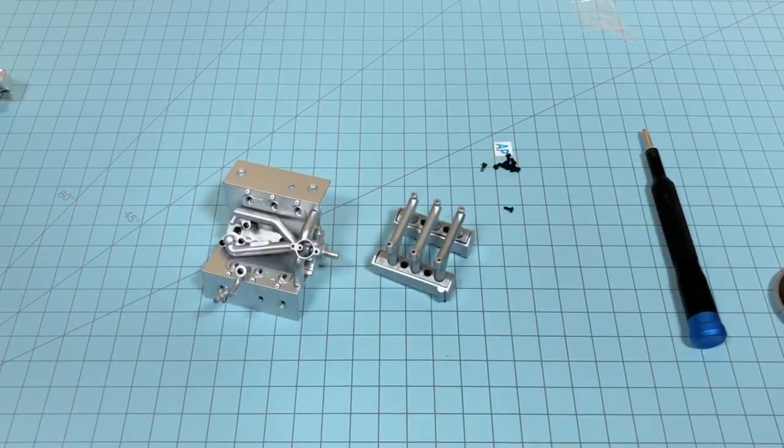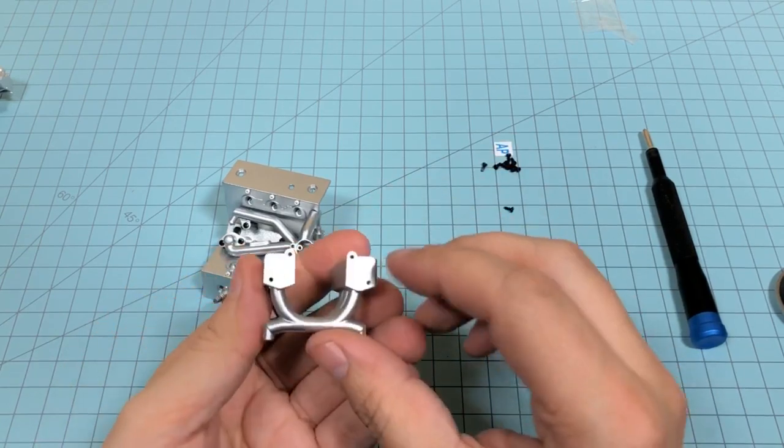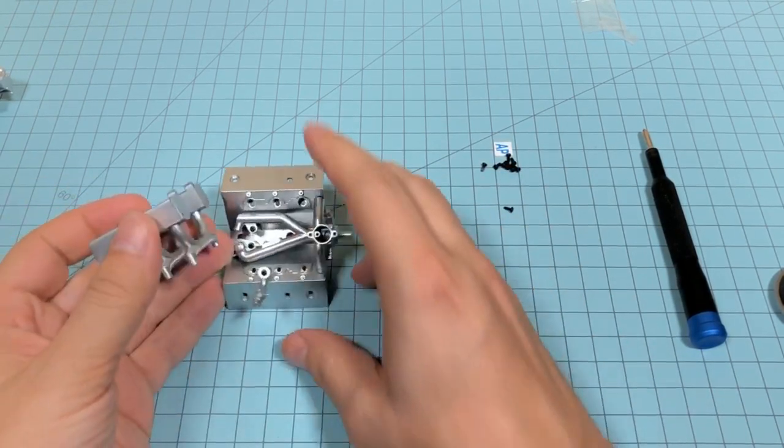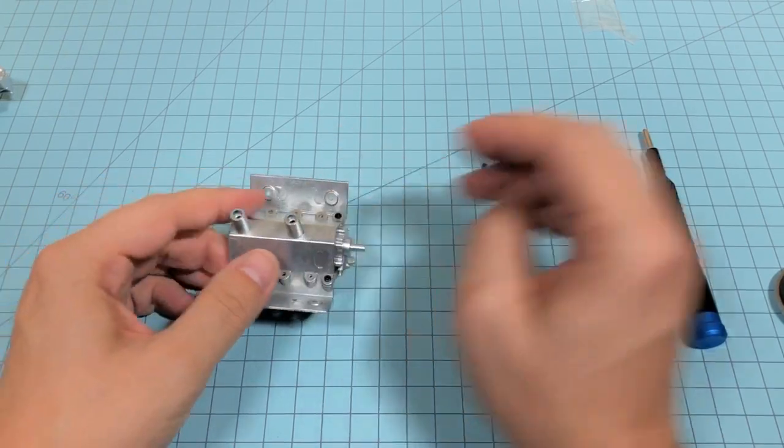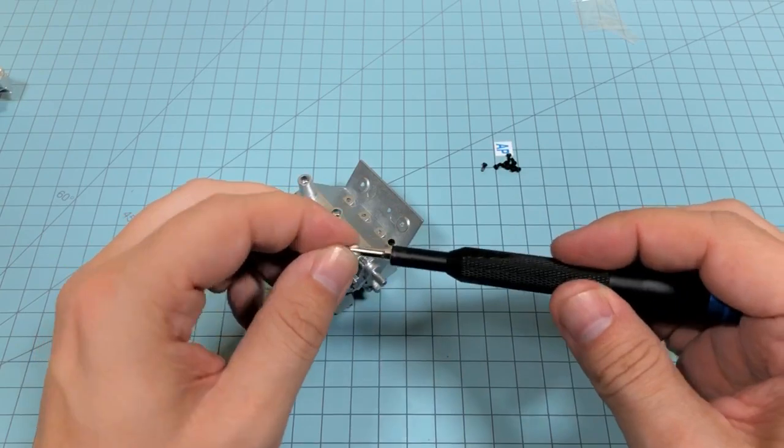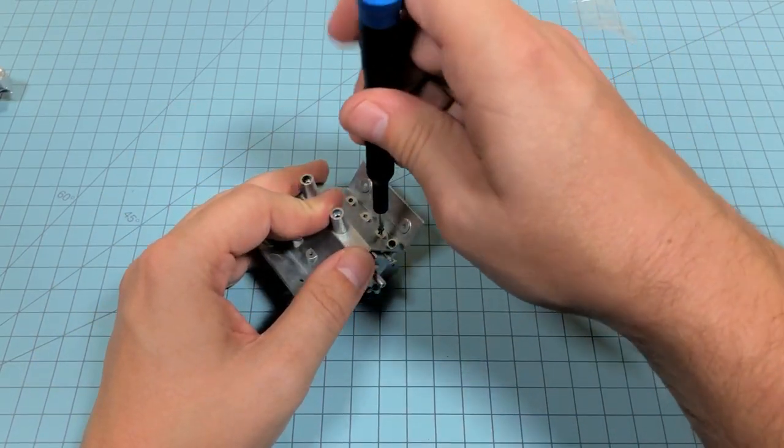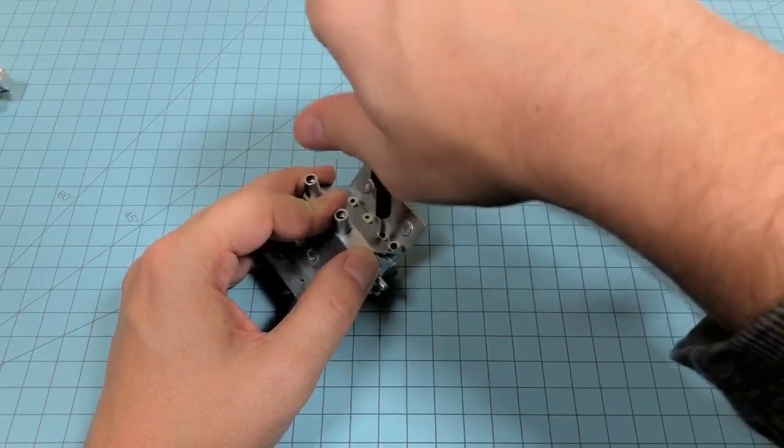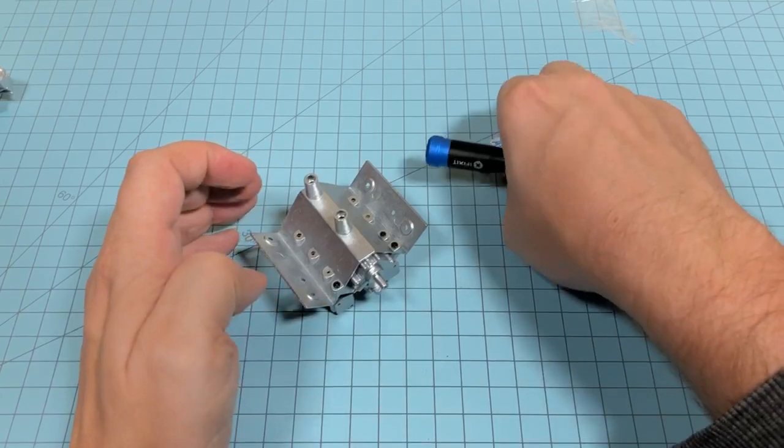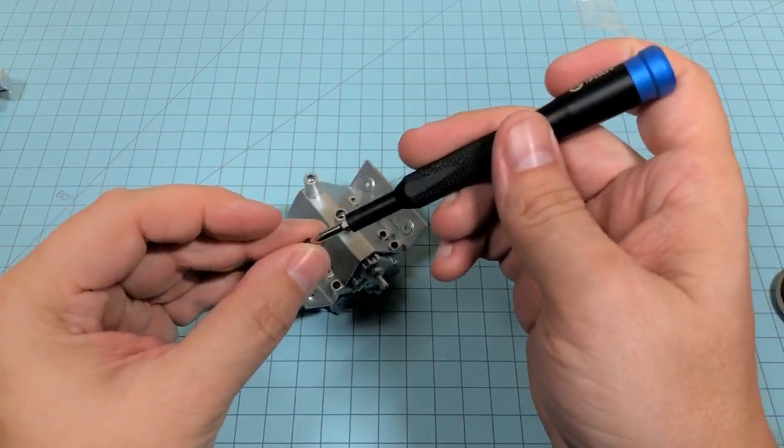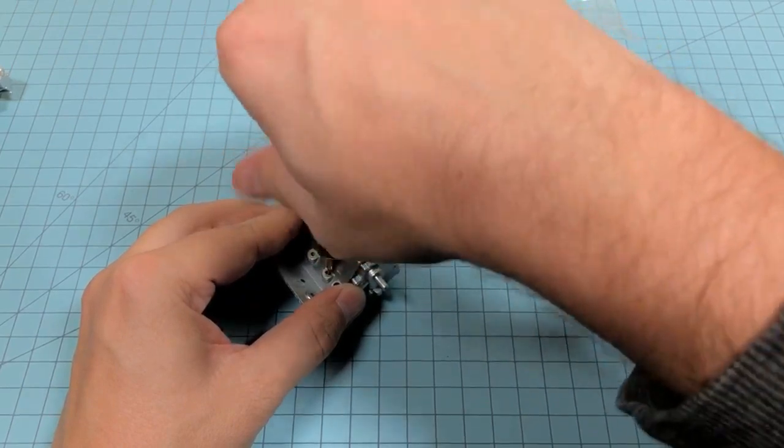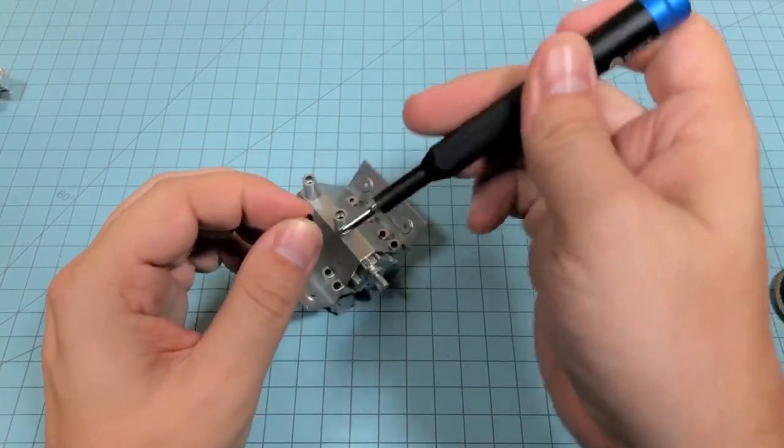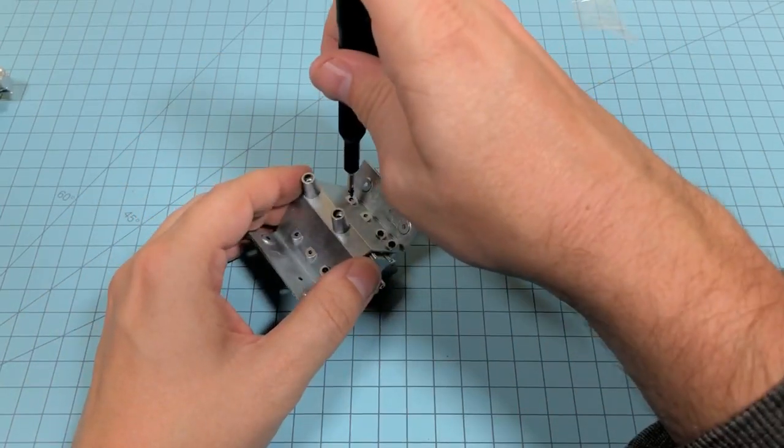Now we just got to figure out which way we got to put this on to the engine. So we're gonna look at the mount. You see that there's two screws right here so that's going to go towards the water coolant piece right here and then we'll flip this over and start putting these back in here again. All right.